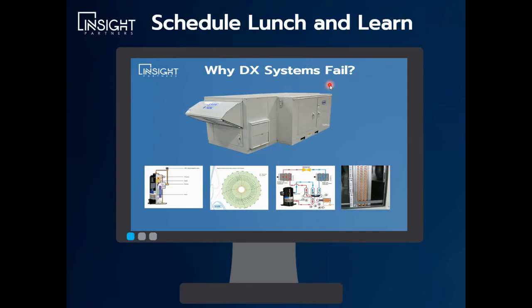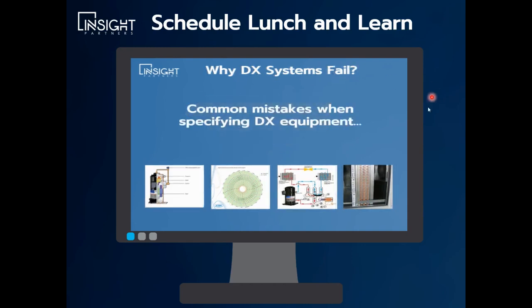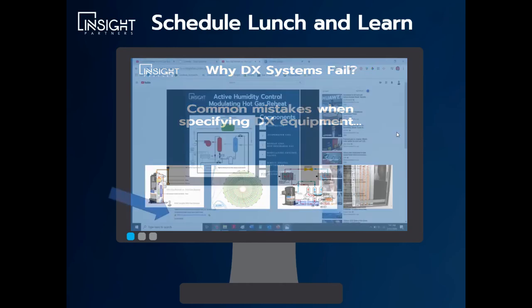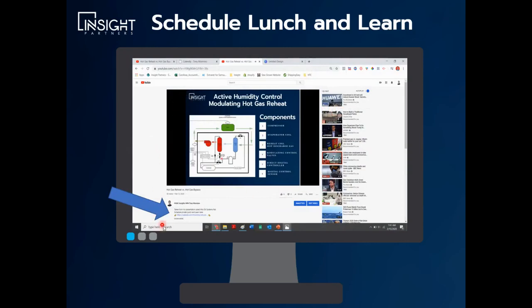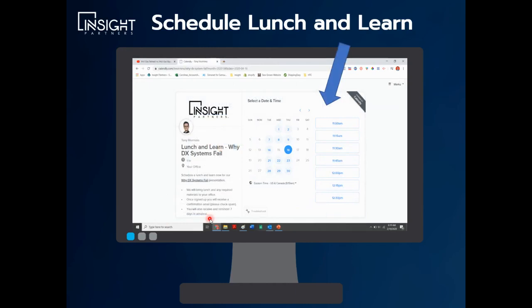These slides were taken from a presentation called 'Why DX Systems Fail.' I've been in the industry for about 20 years and summarized the most common mistakes I see when people are specifying complex DX equipment, similar to an Aon product. It's a really good presentation — if you want to see it, you can schedule a lunch and learn with me right now. If you're watching this on YouTube on your desktop, there's a little blue link below — click it, it'll take you to a live calendar synced with my Outlook where you'll see available dates. Pick a date, pick a time, put in your email, you'll get a confirmation. We'll coordinate headcount, bring lunch by, there's no charge at all.